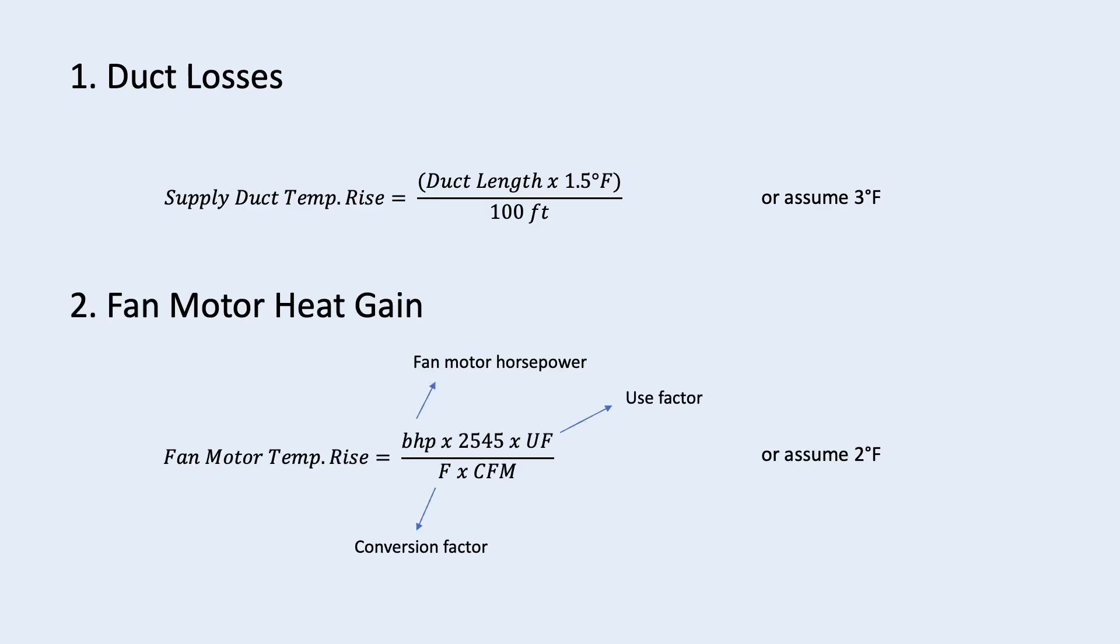Next is the fan motor heat gain. It is generally calculated using this formula. However, there is a slight difference between if the fan motor is inside the air stream or outside the air stream. If the fan motor horsepower is not sure yet, we can assume a temperature rise of 2 degree Fahrenheit.